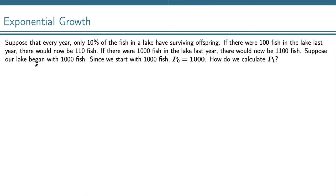Suppose our lake began with 1,000 fish. Since we start with 1,000 fish, P0 is equal to 1,000. How do we calculate P1? Well, this is our formula.